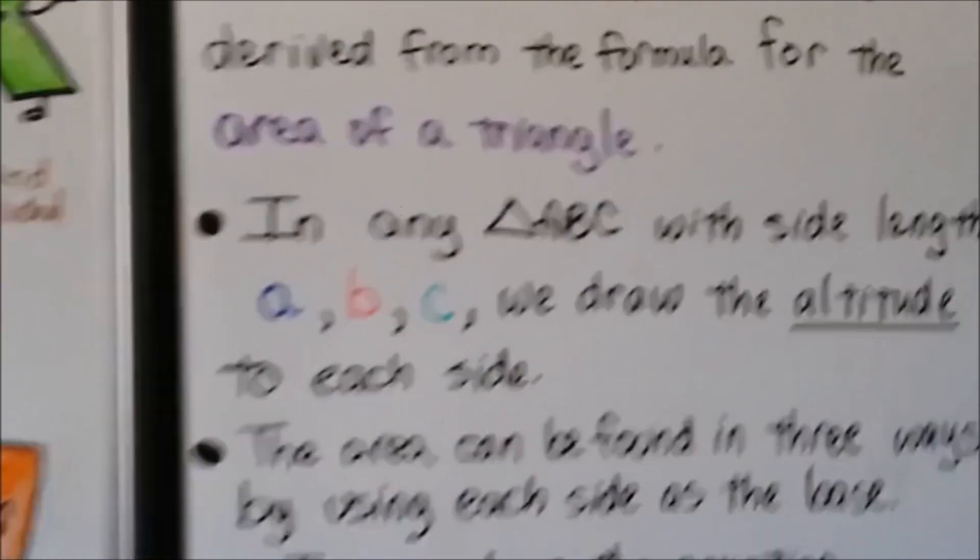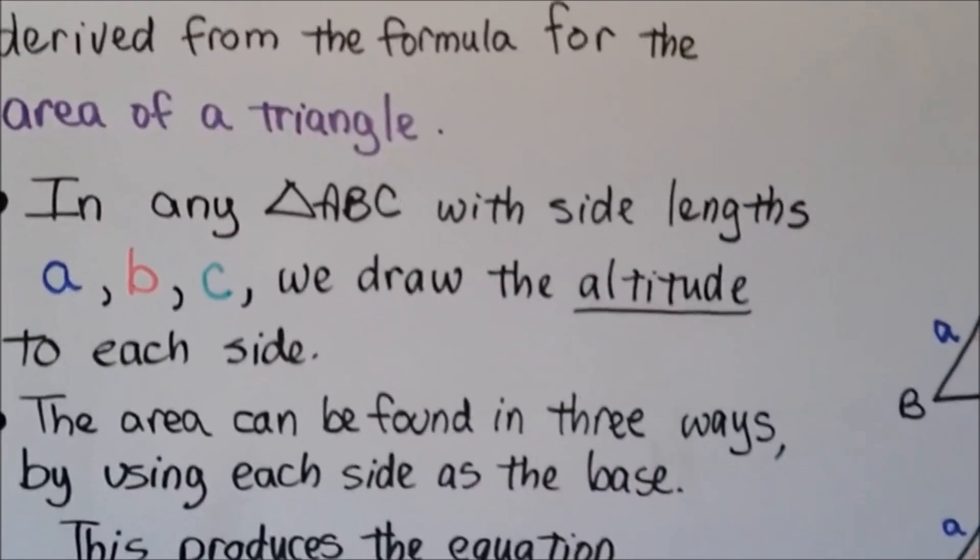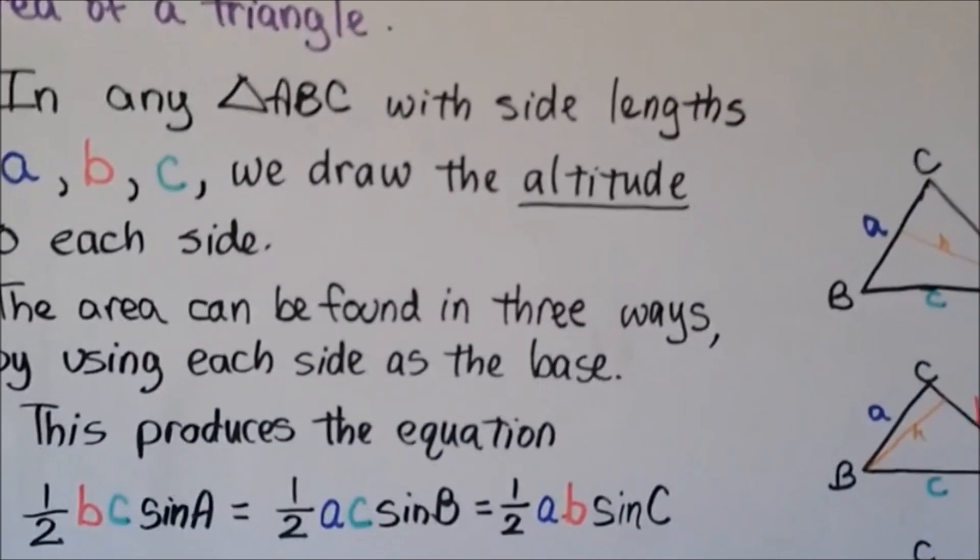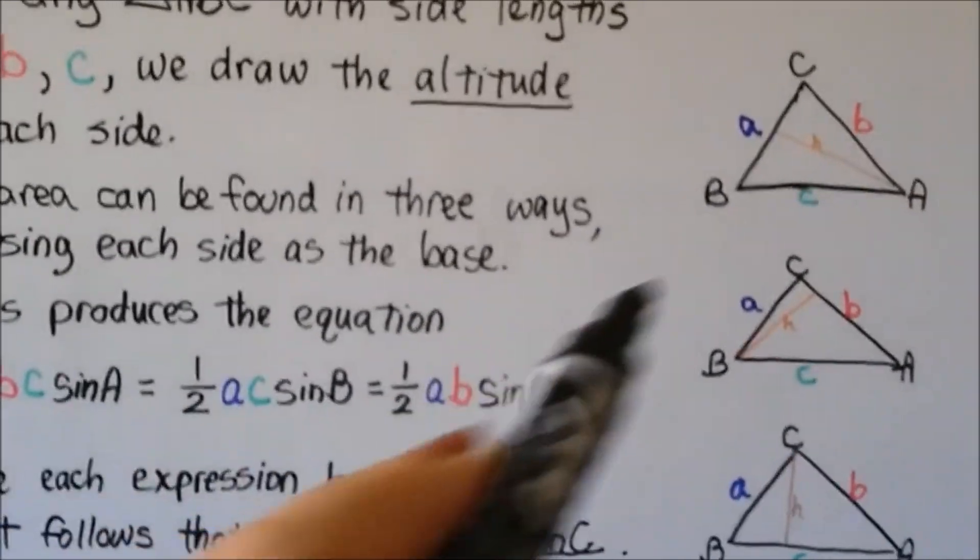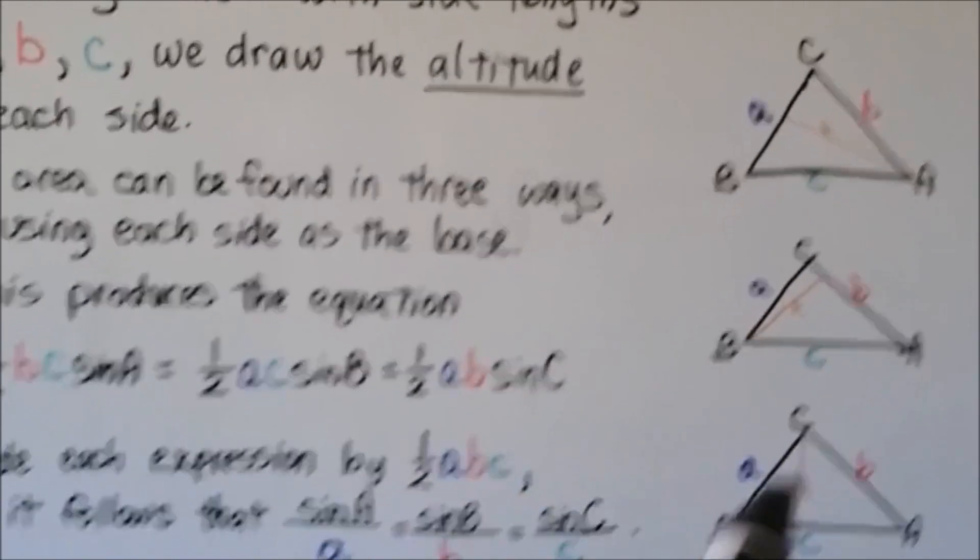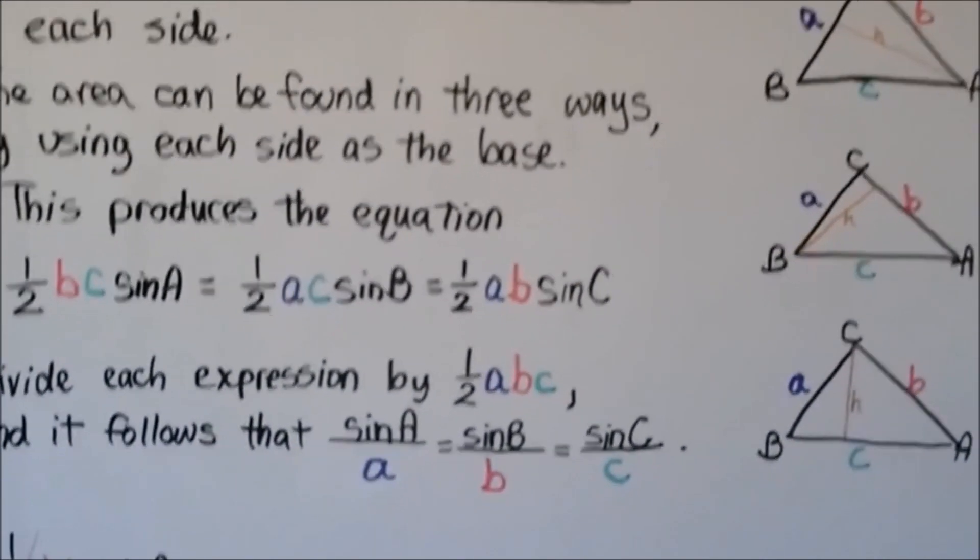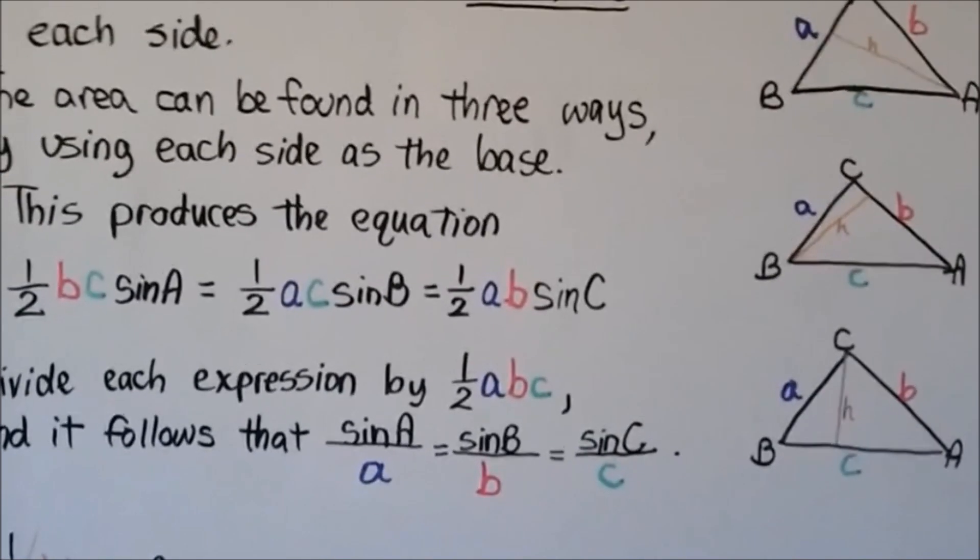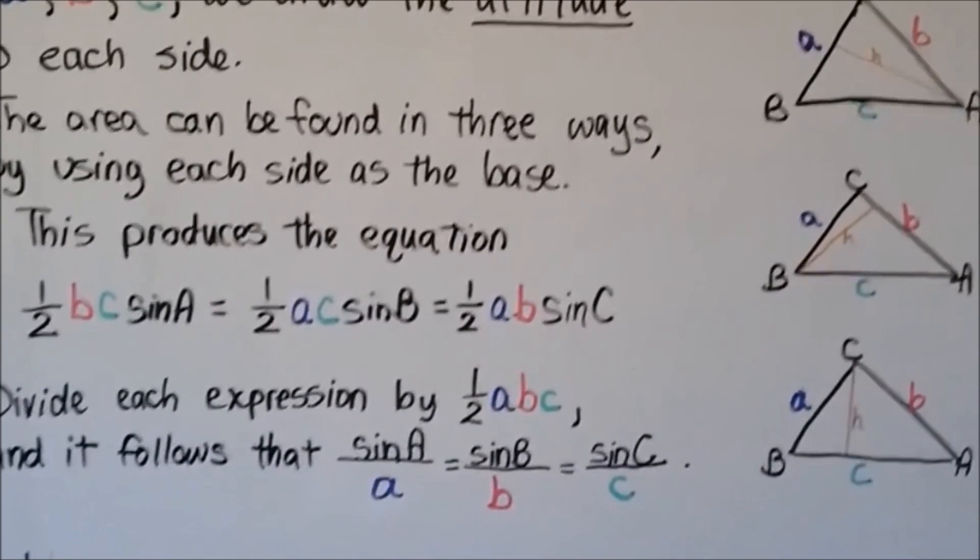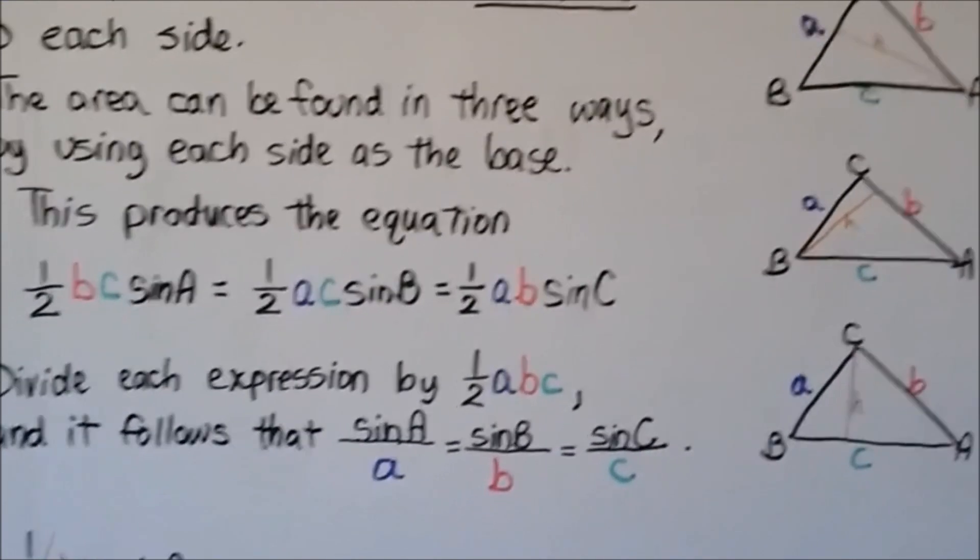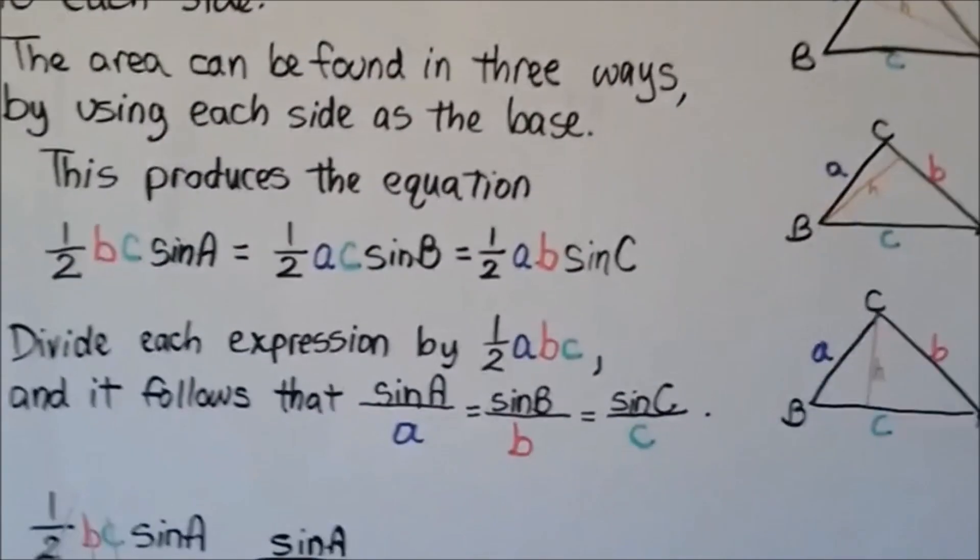The law of sines can also be derived from the formula for the area of a triangle. In any triangle ABC with side lengths a, b, and c, we draw the altitude to each side. Here we've got this altitude, we've got this altitude, and we've got this altitude. The area can be found in three ways by using each side as the base. This produces the equation half BC sine of A equals half AC sine of B equals half AB sine of C. We divide each expression by half ABC.